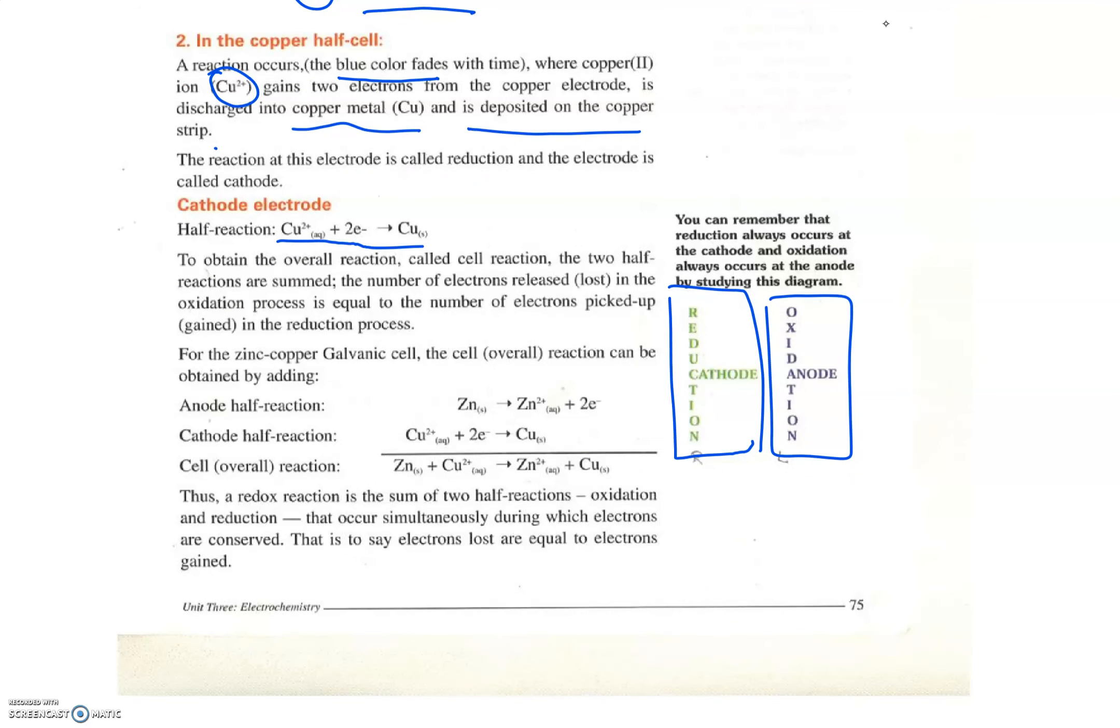These two half reactions that happen in the half cells, we can add them to find the overall cell reaction. Our aim is to simplify the electrons at the end. This is why they should have the same number. If they don't have the same number, we need to multiply maybe one of the half reactions by a number. Of course, the sum is a redox reaction.